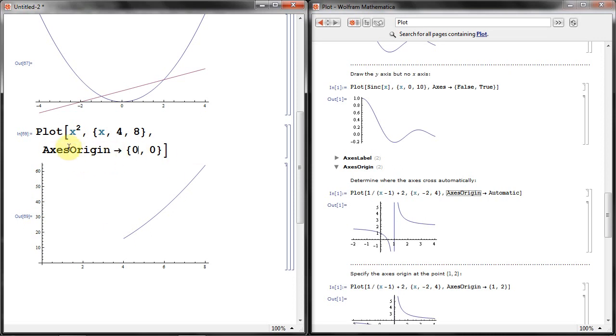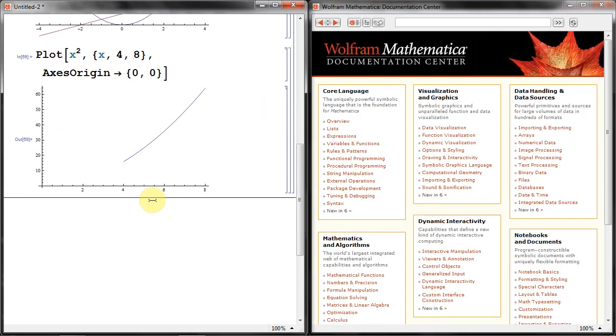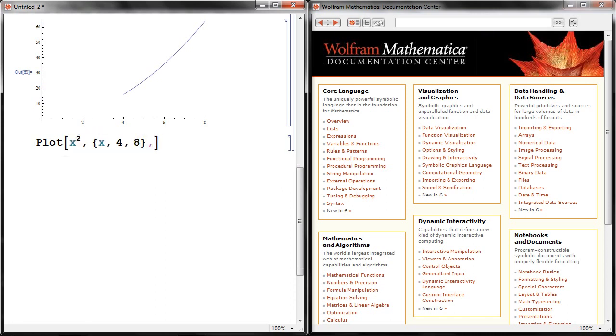Another useful function is the plot range. So maybe I'll just quickly show that as well. So let's just take a new graph. So get rid of all of this. So let's say we want to plot Y equals X squared, from X equals, let's say, minus 3 up to plus 3.